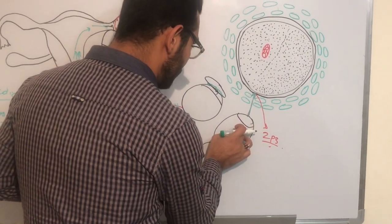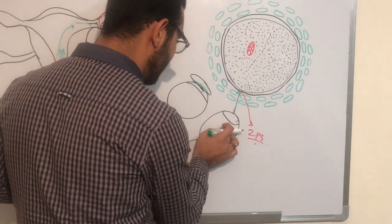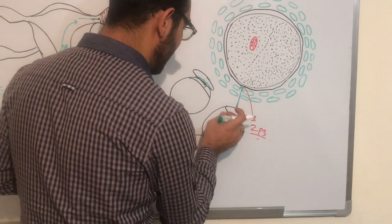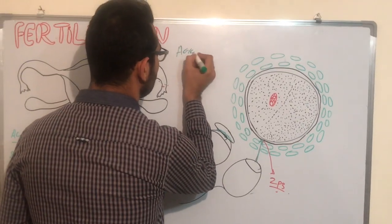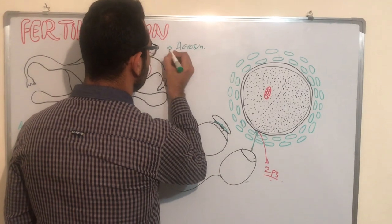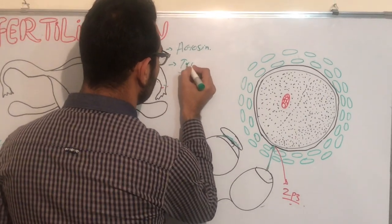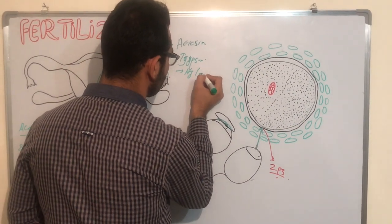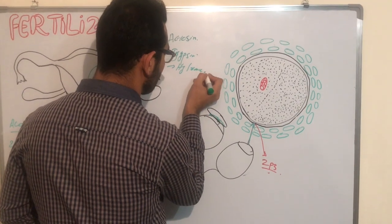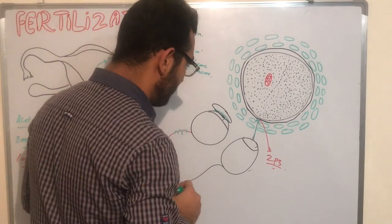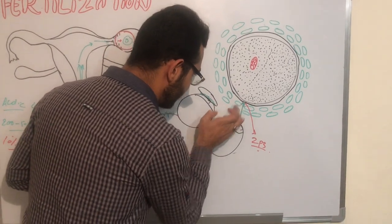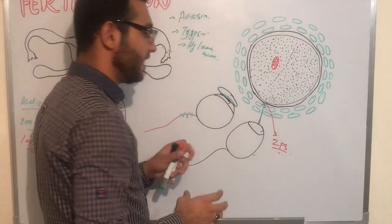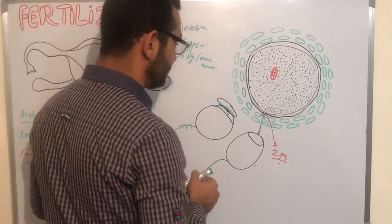Attachment with the zona pellucida causes the acrosomal reaction. In this reaction, the acrosome of the sperm head releases enzymes including acrosin, trypsin, and hyaluronic acid. When these enzymes react on the corona radiata cells with the GP3 receptor, this reaction is called the acrosomal reaction.